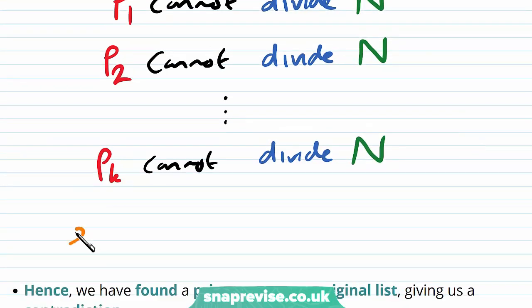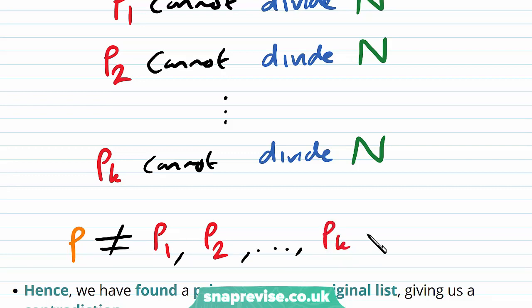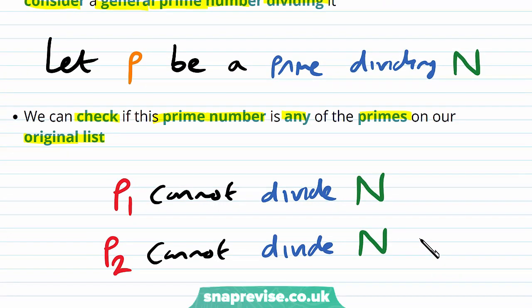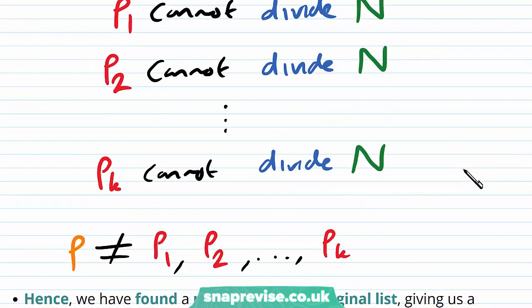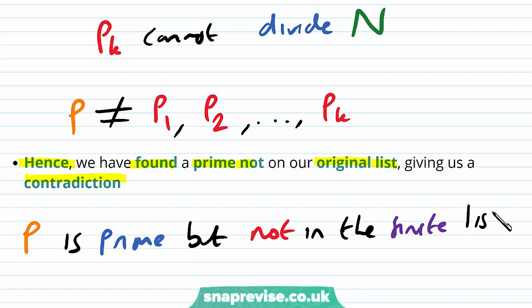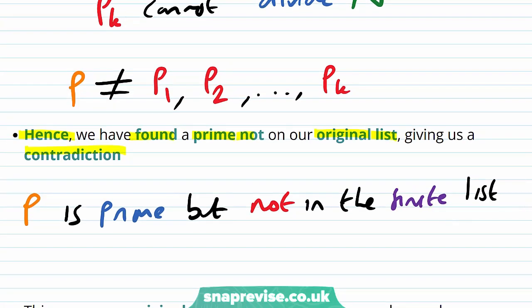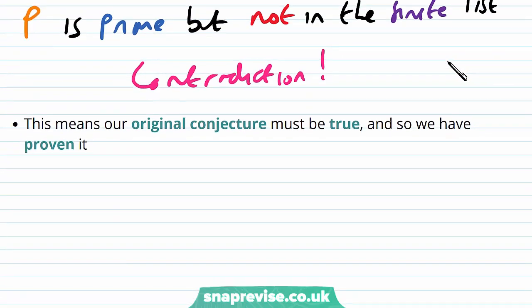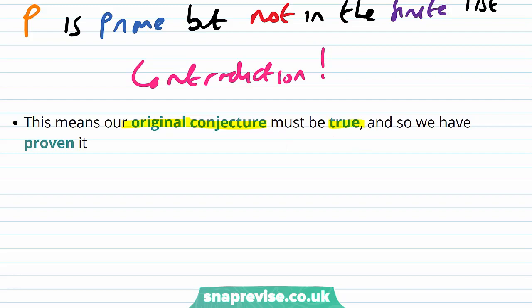Therefore our prime p cannot be equal to any of p1, p2, ... up to pk, because p has a property which none of these numbers have: it itself divides capital N, but none of them divide N. And therefore we cannot have that p is any of these primes. Hence we have found a prime not on our original list, giving us a contradiction. p is a prime but not on our finite list of all primes. This is our logical inconsistency. We call this a contradiction, which means our original conjecture must be true. We have proven that there are infinitely many primes.